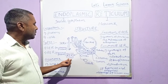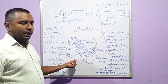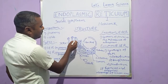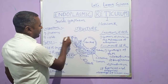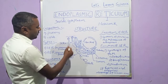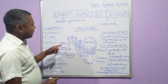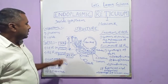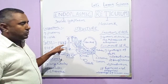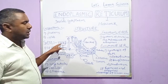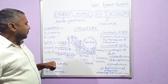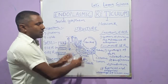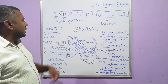Then if you see this other portion, no ribosomes are present. So these are called Smooth Endoplasmic Reticulum, abbreviated as SER. This is the structure of the endoplasmic reticulum.